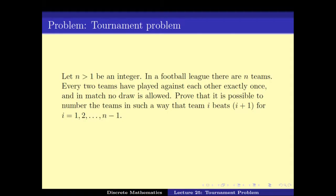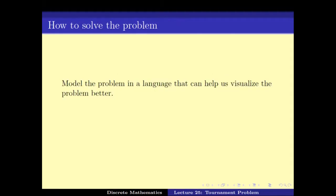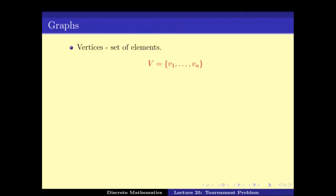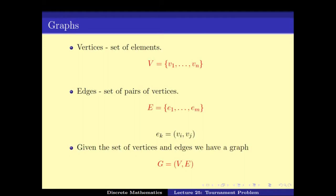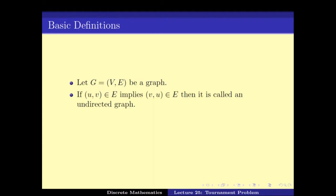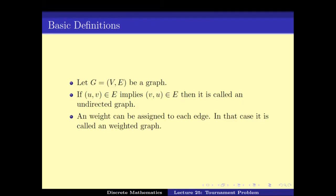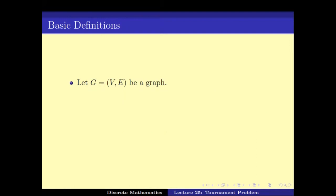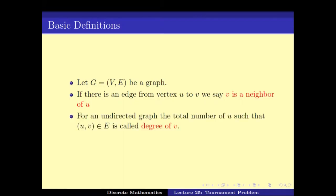In the last video lecture we saw how to model this problem as a graph. As a quick recap: a graph is a set of vertices and a set of edges, which are basically pairs of vertices. The graph is given as (V, E) where V is the set of vertices and E is the set of edges. If u,v is an edge and that implies v,u is also an edge, then the graph is undirected. If there is an edge from u to v, then v is the neighbor of u, and in an undirected graph the number of neighbors that v has is called the degree of v.